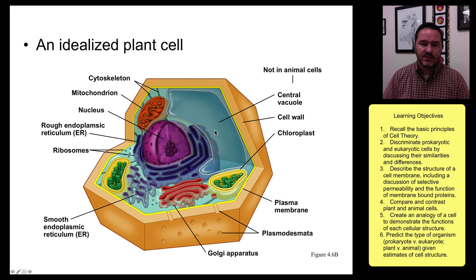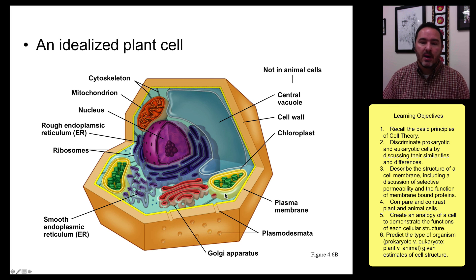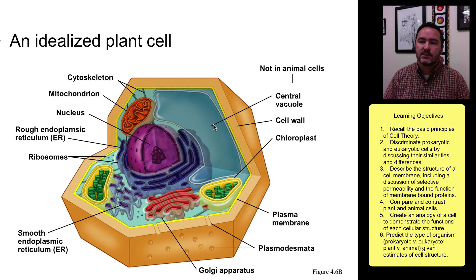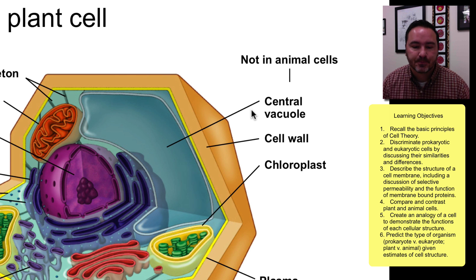A plant cell is very similar — it has a nucleus, rough endoplasmic reticulum, smooth endoplasmic reticulum, and Golgi apparatus — but it also has chloroplasts, central vacuoles, and a cell wall. These three things are not found in animal cells.